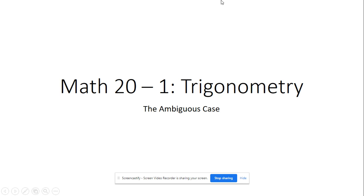Hey guys. We're continuing our discussion of trigonometry and the topic is called the ambiguous case. This is part of the sine law questions, and it's probably one of the more difficult concepts to wrap your head around in this unit. The word ambiguous means uncertain, and I'll show you what I mean by that.